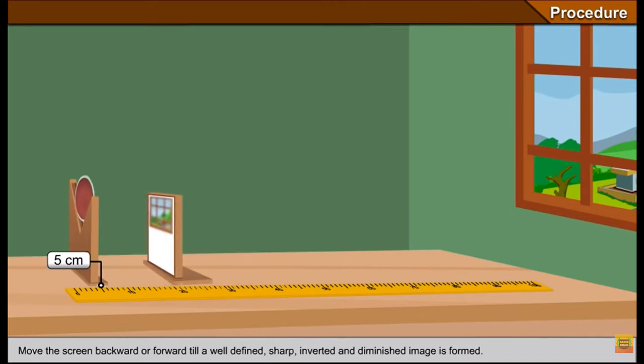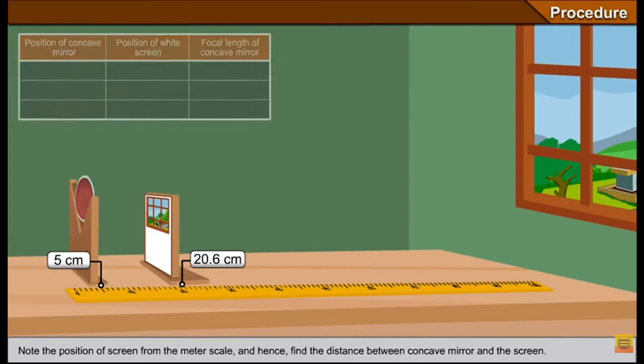Because we want to get a well-defined, sharp, inverted and smaller image of the building or the tree that we are watching outside. So let us enter the values here.